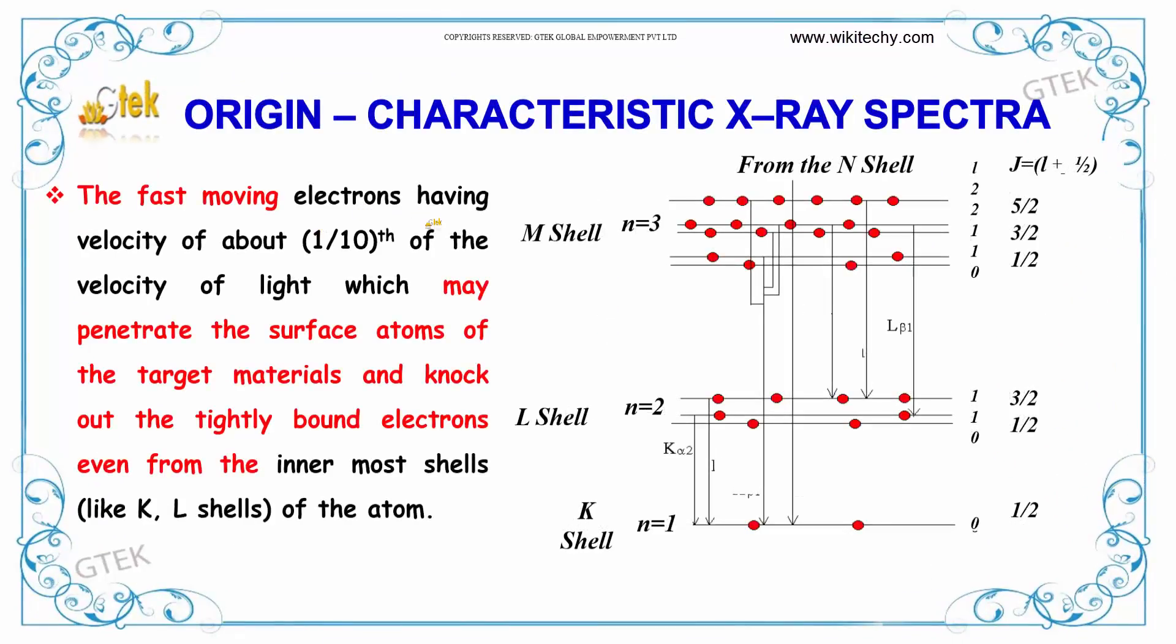The fast-moving electrons having velocity of about 1/10th of the velocity of light may penetrate the surface atoms of the target material and knock out the tightly bounded electrons even from the innermost shells, like K and L shells of the atom.